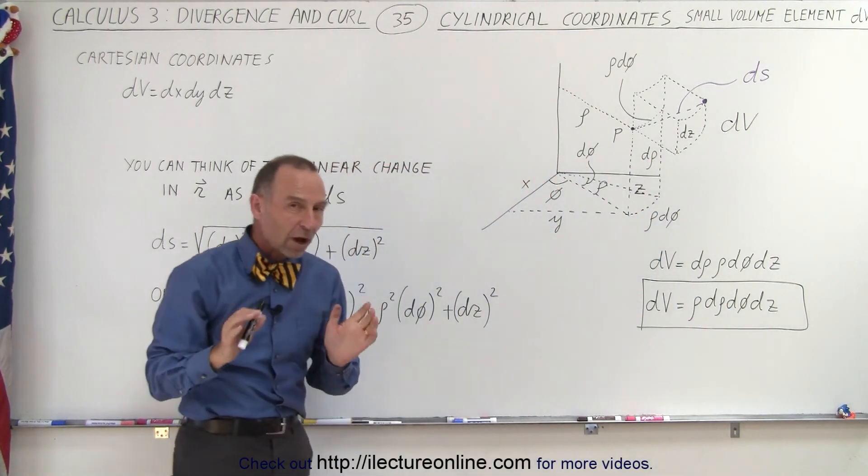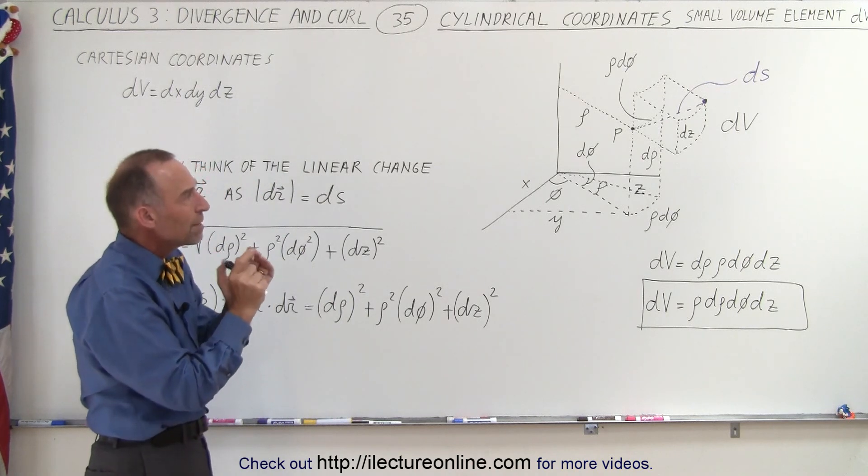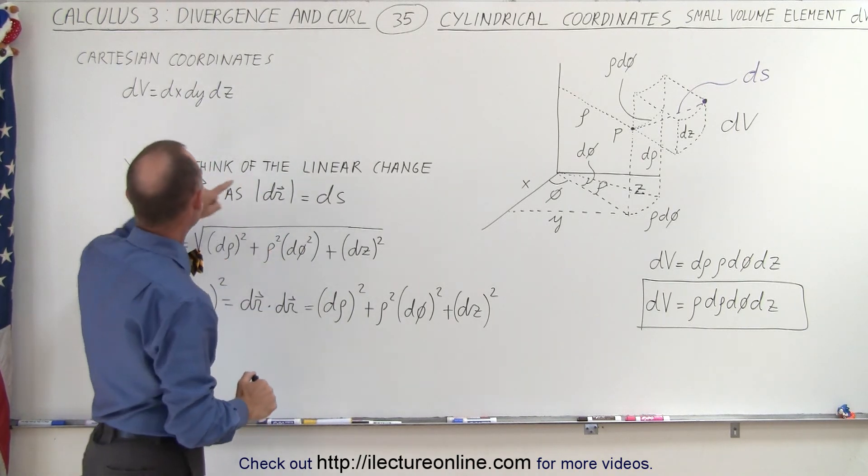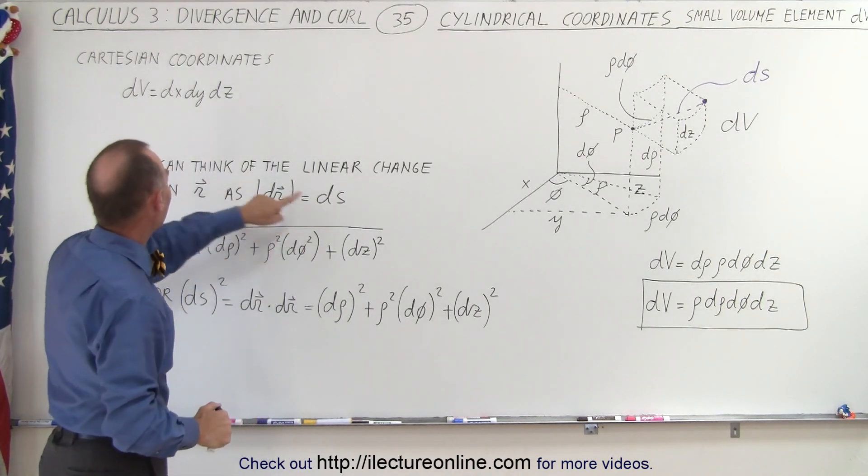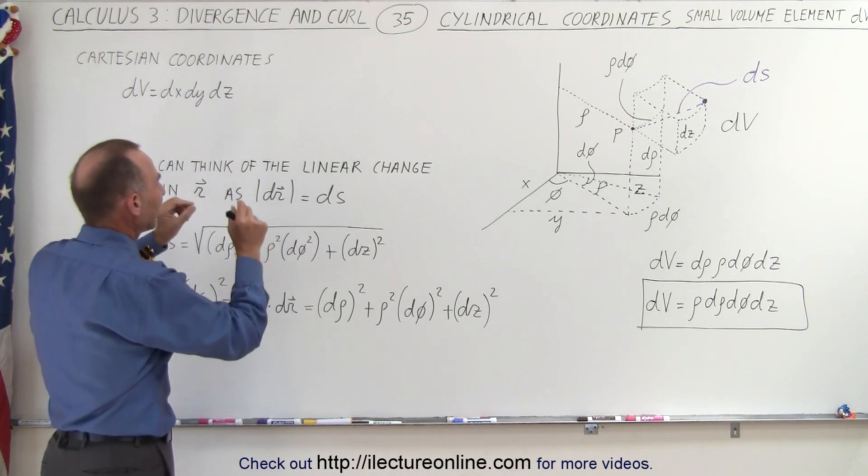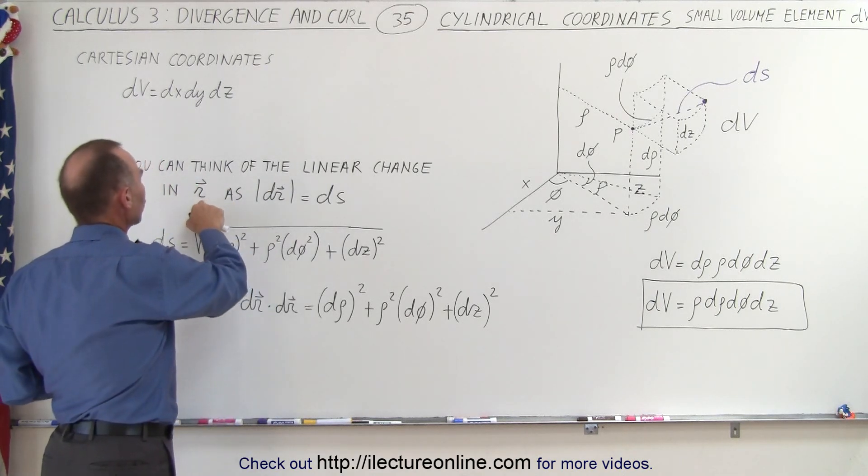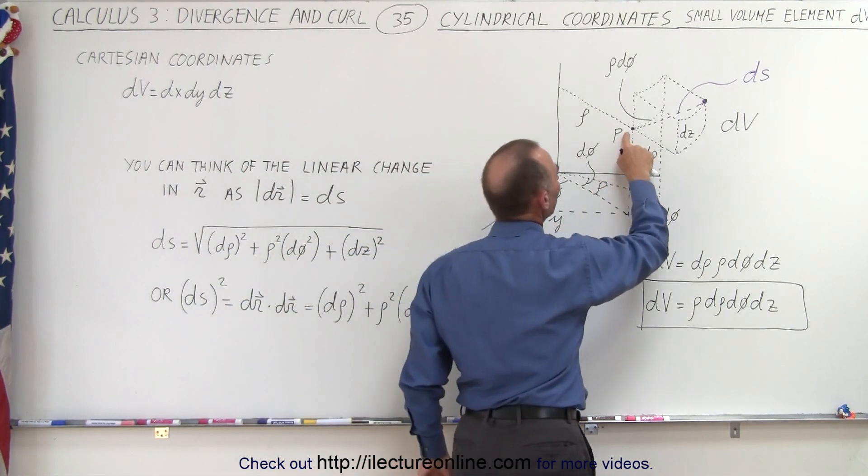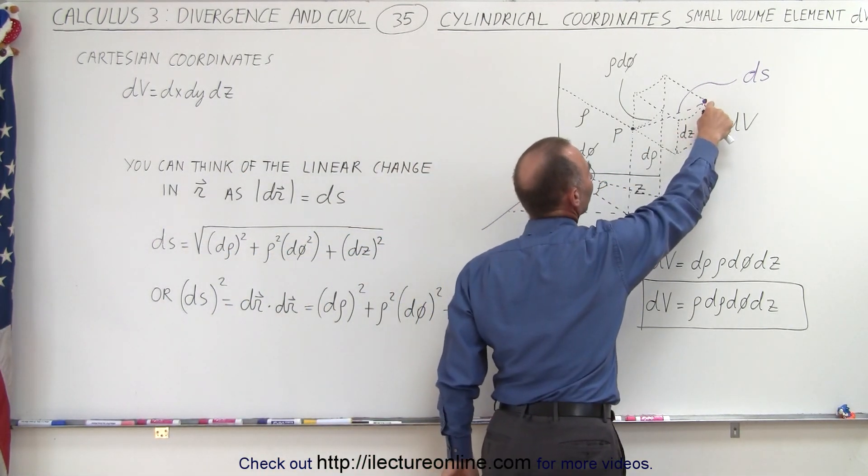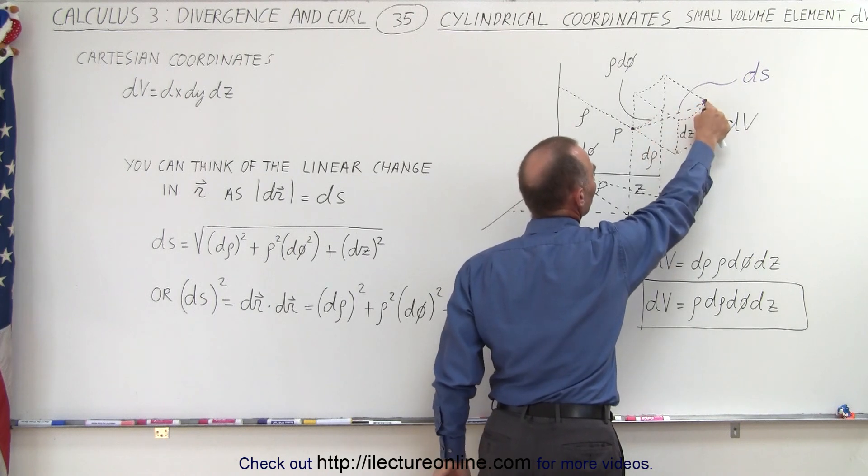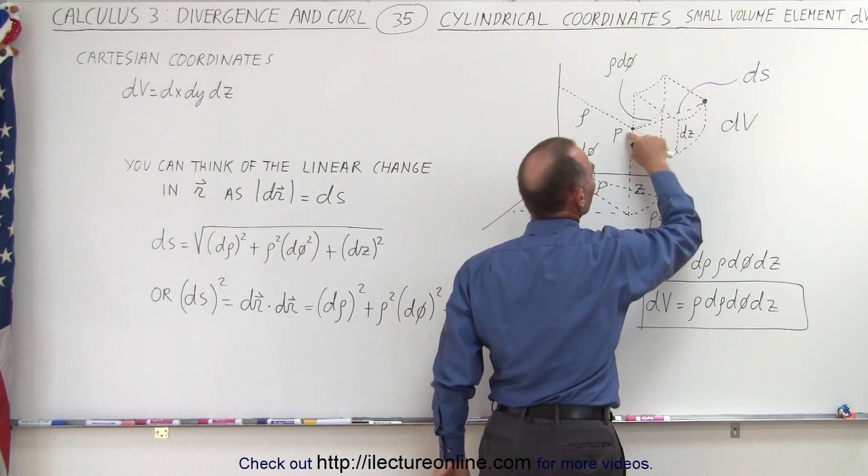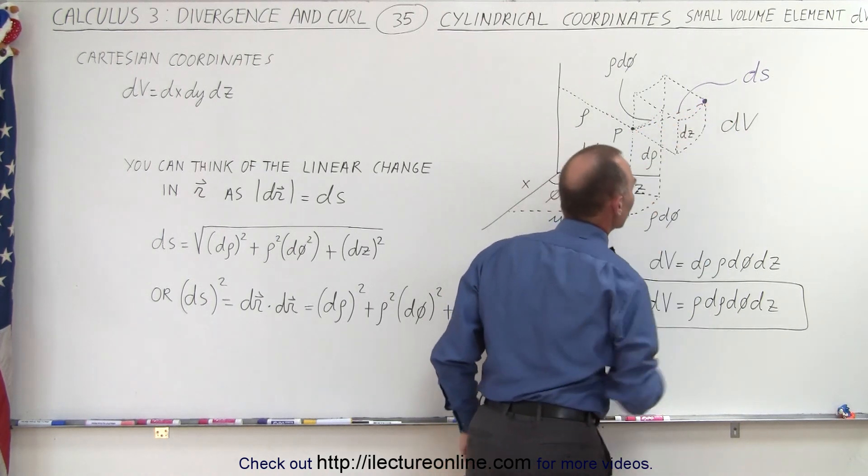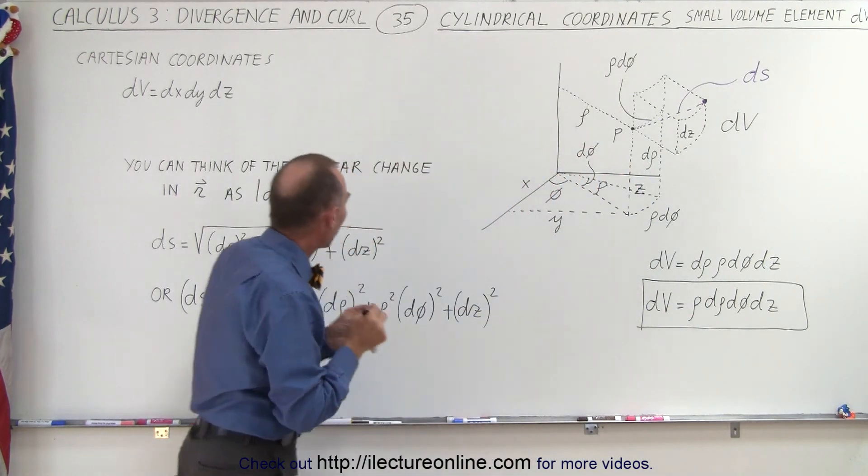Now also, there's often a misunderstanding what we mean by ds. ds is defined as a small change, linear change, in the vector r. So if we go from one point, let's say the point P here, to another small point very, very close by, but a small distance away, right here, then ds represents that linear distance. It's the magnitude of dr.